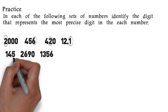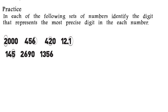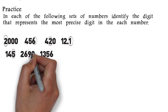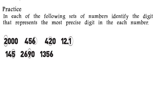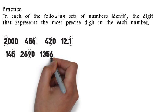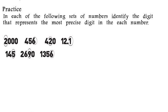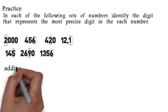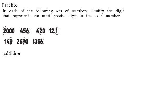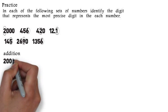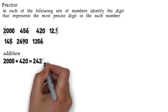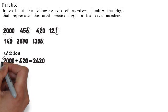Let's try some more. In 145 the 5 is the most precise digit. In 2690 the 9 is the most precise digit. In 1356 the 6 is the most precise digit. Remember, the most precise digit is the farthest-to-the-right significant digit you can find in the number.